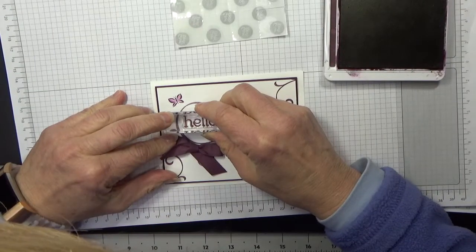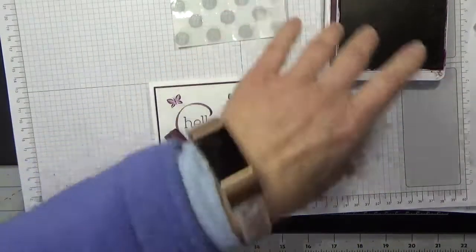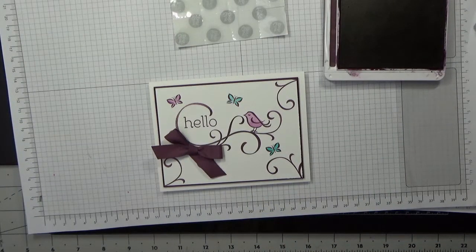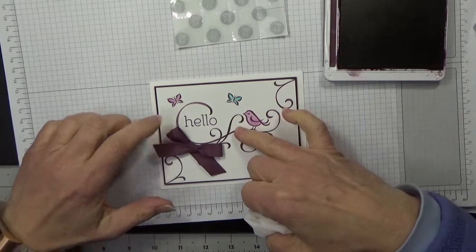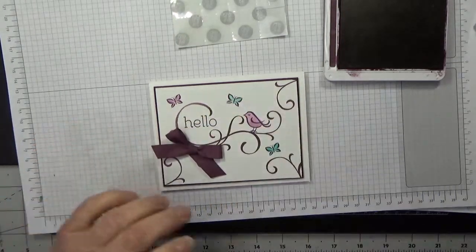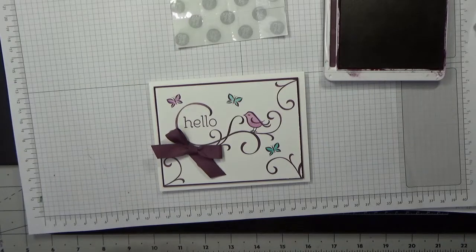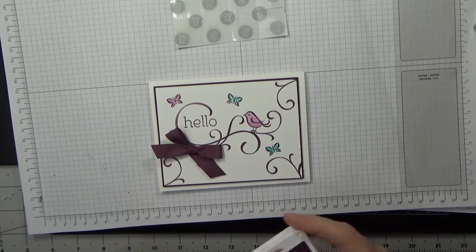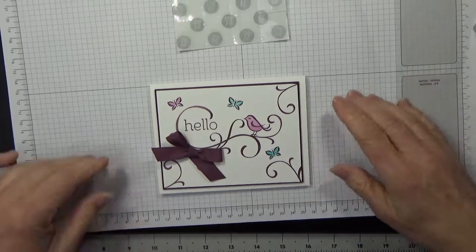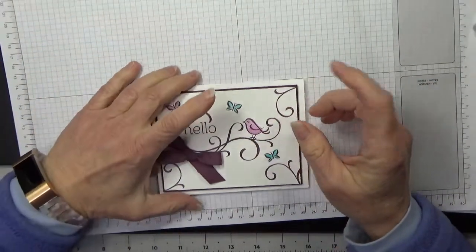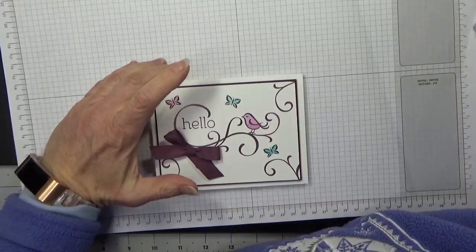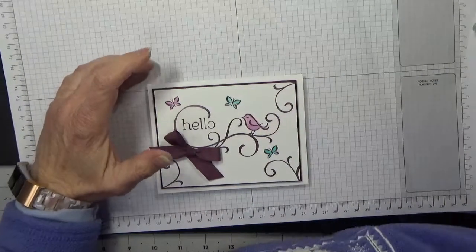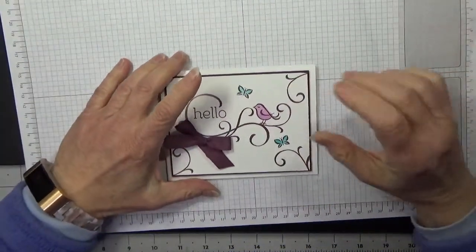I think it's going to work. Yep, it worked. It may not have worked because of the dimensionals underneath, but I knew there were dimensionals here and here, but not here, so that's why it did work. But if it didn't work, you could always stamp 'hello' on a scrap piece of paper and then punch it out with some kind of label punch and just stick it in there.